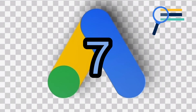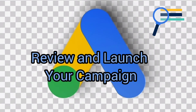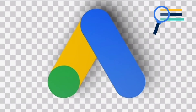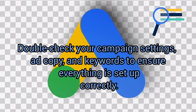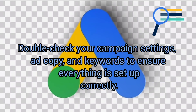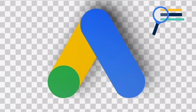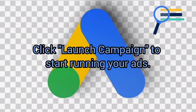Number seven: Review and launch your campaign. Double-check your campaign settings, ad copy, and keywords to ensure everything is set up correctly. Click Launch Campaign to start running your ads.